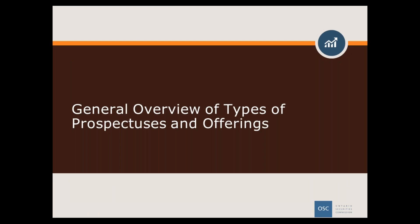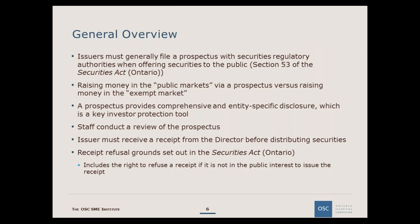Let's begin with a general overview of the types of prospectuses that can be filed. Section 53 of the Ontario Securities Act states that no person or company shall trade in a security if the trade would be a distribution of the security unless a prospectus is filed and a receipt has been issued by the director. The Corporate Finance Branch of the OSC reviews prospectuses filed by non-investment fund reporting issuers that cite Ontario as their principal regulator. We review these prospectuses for compliance with disclosure requirements, as investors use these documents to make an investment decision on the offering.